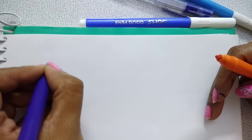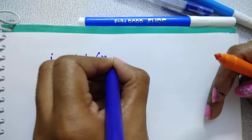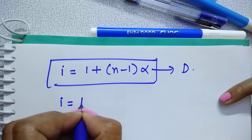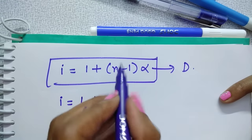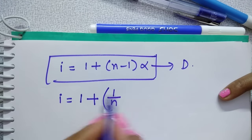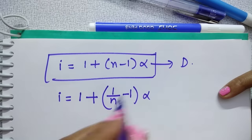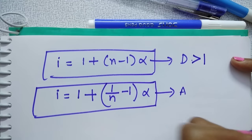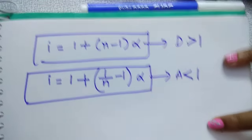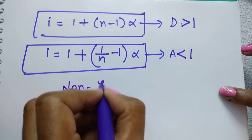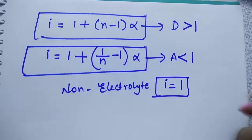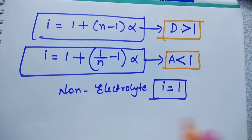Summary: I = 1 + (N − 1)×alpha for dissociation; I = 1 + (1/N − 1)×alpha for association. For dissociation, I is greater than 1. For association, I is less than 1. For non-electrolytes, I equals 1. I hope you liked this video. Thanks for watching.